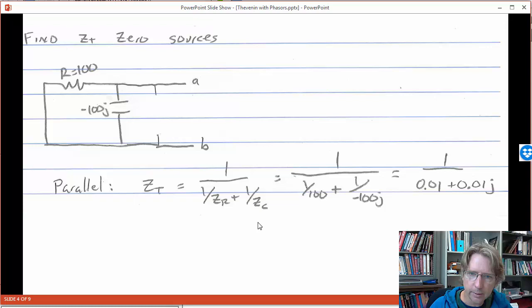So the parallel combination is the 1 over the 1 overs. So here 1 over 1 over ZR plus 1 over ZC all in the denominator. Put the numbers in, 1 over 100 plus 1 over negative 100J, that's ZC.